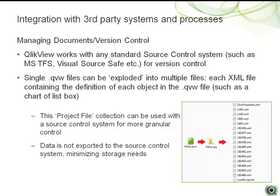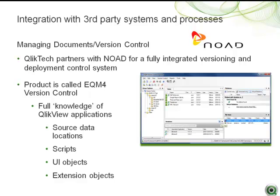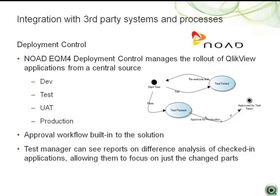NOAAD is a ClickView partner whose product, EQM4, is an integrated version and deployment control solution for enterprise ClickView deployments. Once ClickView documents are imported into EQM4, developers can easily check out one or more documents to their personal workspace, perform additional development, and when finished, the check-in function copies the changed version from the user's workspace into the version control repository. EQM4 deployment control enables easy rollout of multiple ClickView applications to one or more environments or ClickView servers using a single action. When the document is ready to be tested, the change manager can deploy it to the test environment immediately or schedule it for another time. EQM4 helps the test manager by providing reports to scope the test project. Difference analysis identifies the most important changes between the newly developed ClickView document and the version currently in production, allowing the test manager to focus on testing only the changed parts and reducing the risk of missing changed components.